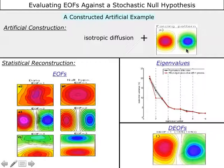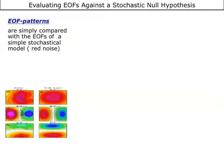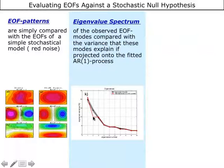So the strategy would be, instead of just taking the EOFs as in the deterministic mode view, you compare the whole structure of the EOF modes altogether. You look at the eigenvalue spectrum and see whether there are deviations. If there are large deviations, you ask which pattern is maximizing this deviation — and these are my interesting teleconnections.